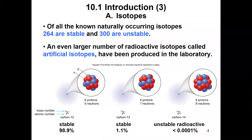Of all known naturally occurring isotopes, 264 are stable and 300 are unstable — so more than half are not stable. An even larger number of radioactive isotopes, called artificial isotopes, have been produced in the laboratory, so there are a lot of unstable radioactive isotopes.